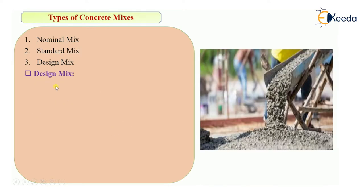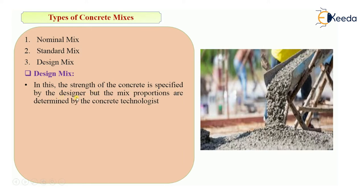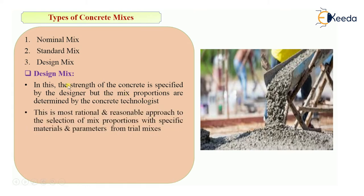The last type is design mix. In this, the strength of concrete is specified by the designer, but the mix proportions are designed by the concrete technologist. At the time of structural design, the structural engineer will stipulate some grade of concrete for the structure — M15, M20, M25, or M30 — and the concrete technologist will design the mix proportions to achieve that strength.